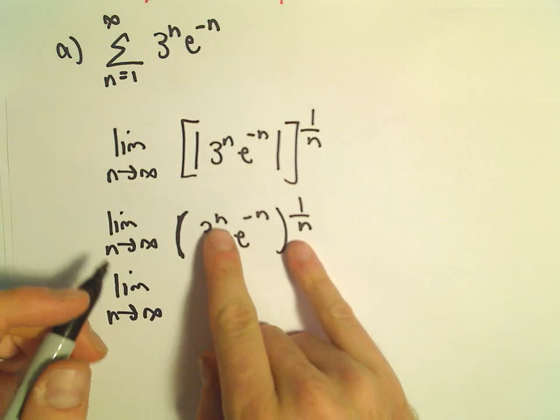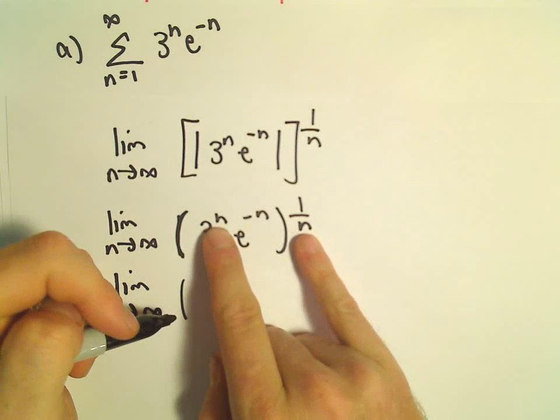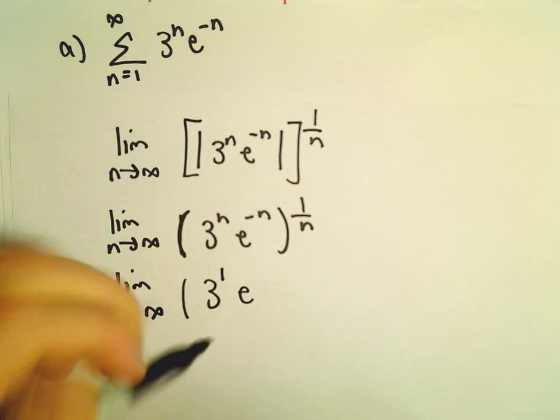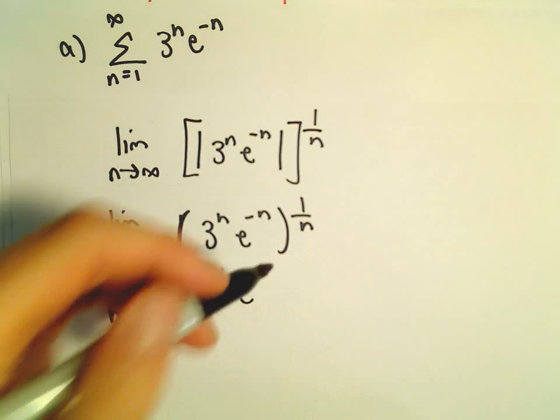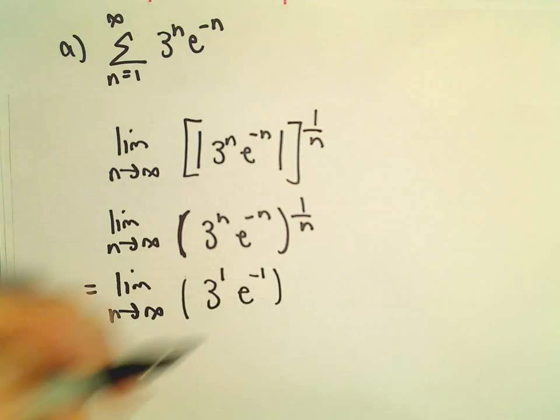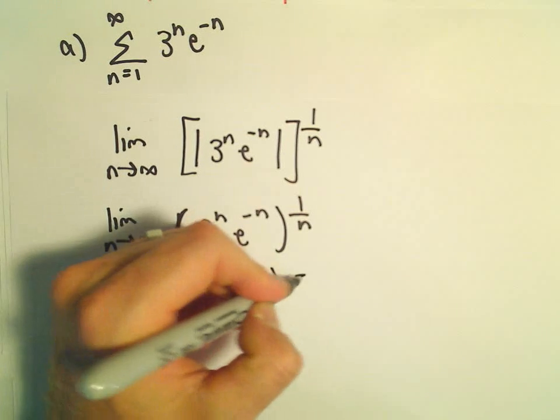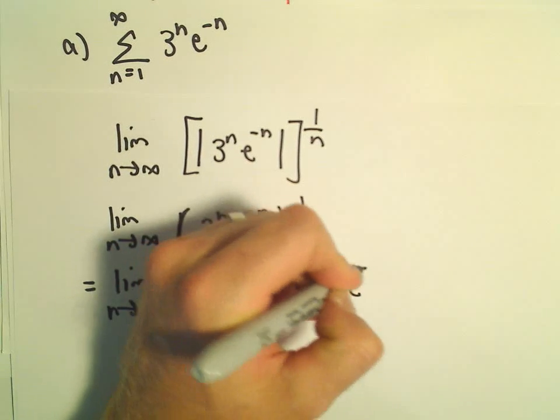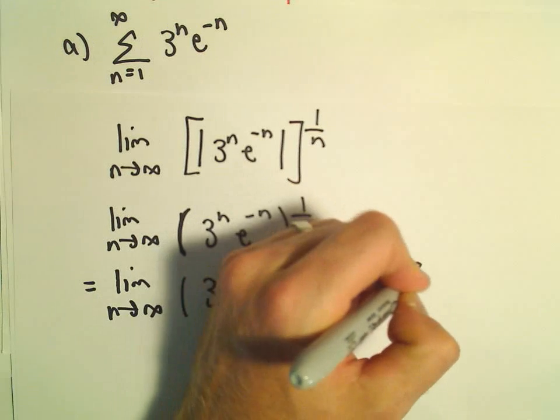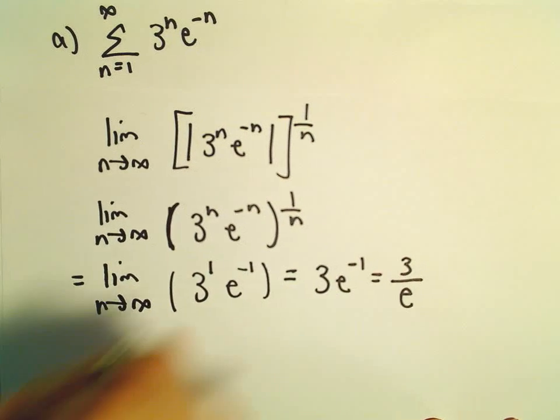Well, we have to multiply exponents. So we'll get n times 1 over n. That'll give us 3 to the 1st. Then, we'll get negative n times 1 over n. That'll give us e to the negative 1st power. This is just a constant, so the limit will equal 3 times e to the negative 1. But that's going to be 3 over e to the positive 1st power.